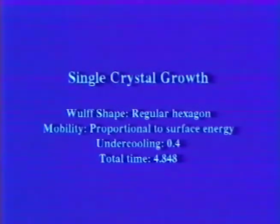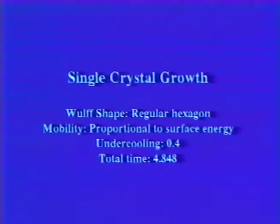Again, it can be seen that when the undercooling is reduced, the density of the crystal growth is reduced, and the shape of the dendrites and side branches becomes more noticeably crystalline.